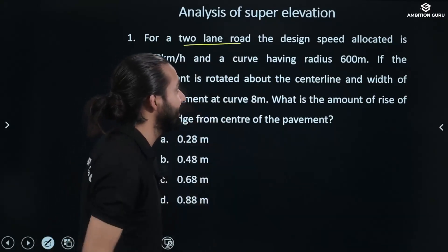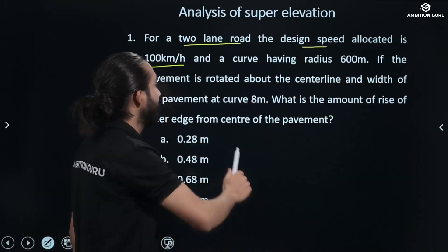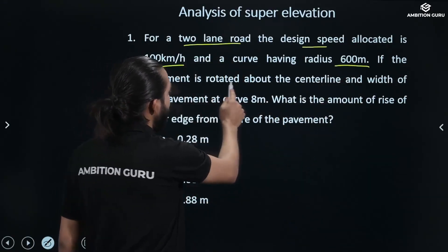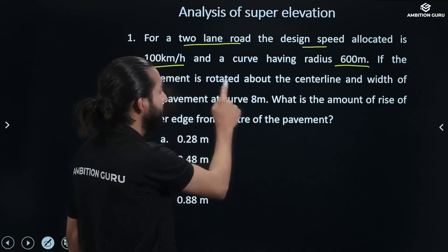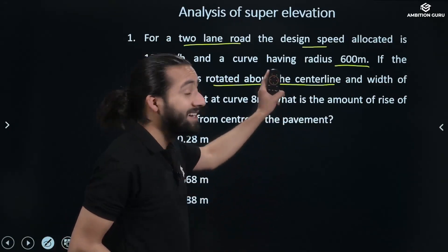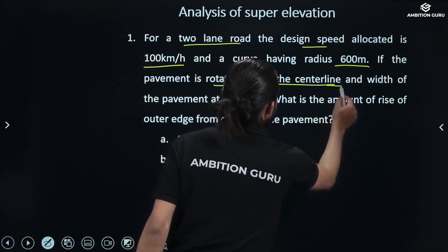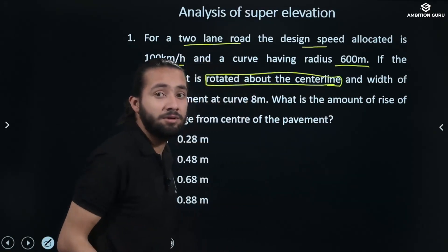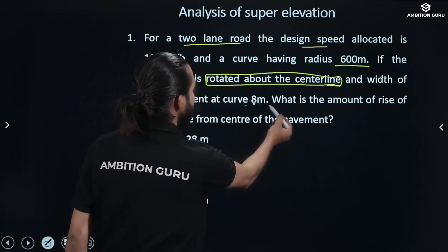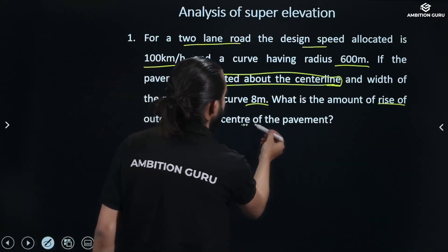For a two-lane road, design speed allocated E is balanced. Design speed is 100 km/h and the curve has a radius of 600 meters. The pavement is rotated about the center line. The width of the pavement at the curve is 8 meters. What is the amount of rise of the outer edge from the center of the pavement?